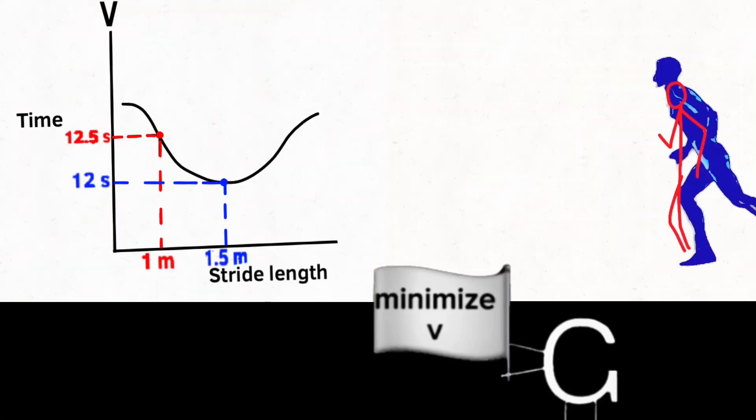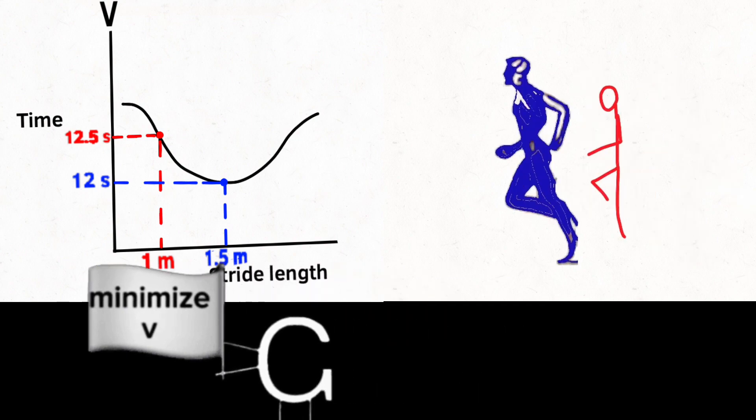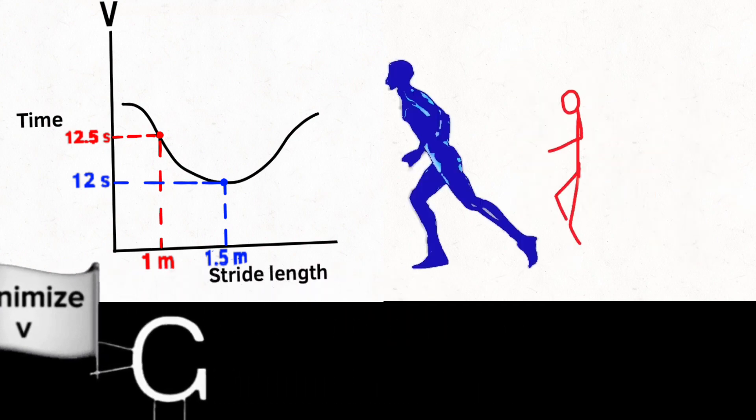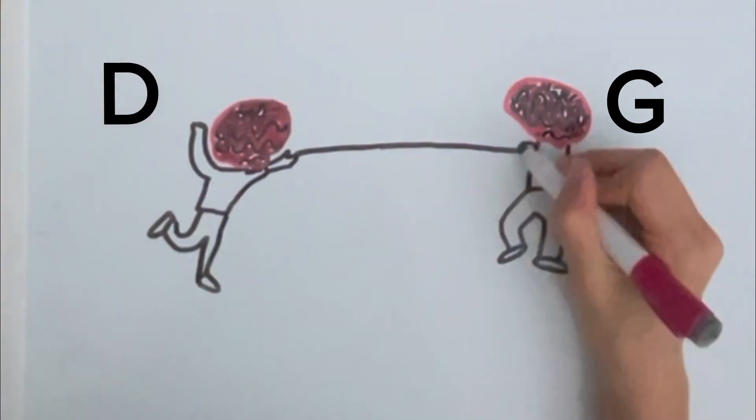But how does the generator learn from its mistakes? Parameters and gradients. Parameters refer to the learnable constants of the generator, like a runner's performance. Gradients represent feedback from the discriminator indicating the direction and magnitude of change needed to enhance a parameter.